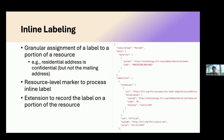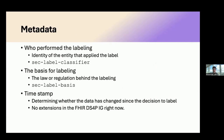Aside from assigning labels at the FHIR resource level, the DS4P defines a mechanism for inline labeling. An example from a real use case: someone staying at a shelter where their residential address is confidential, but that confidentiality doesn't apply to the entirety of the patient record. The mailing address is okay to share, but the residential address has this sensitivity. This requires sub-resource labeling at a portion level. The FHIR DS4P mechanism uses a resource-level marker to trigger deeper inspection, then uses an extension to record the label in the corresponding portion of the FHIR resource.